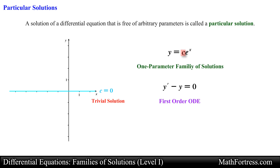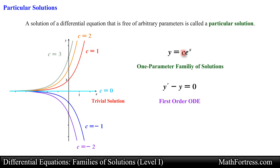In the same manner, we would obtain the following graphs when c equals 1, negative 1, 2, negative 2, 3, and negative 3. Each of these graphs is a particular solution of the family y equals c times e to the x on the interval negative infinity to positive infinity. Keep in mind that a particular solution is free of arbitrary parameters.